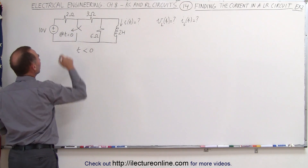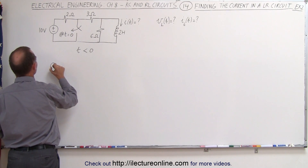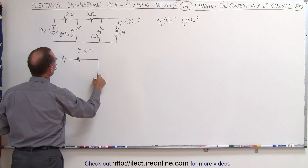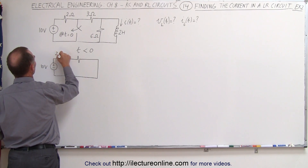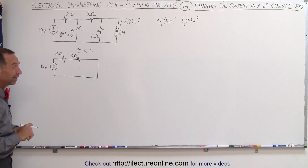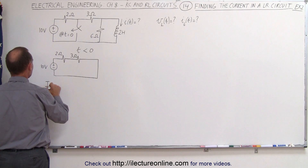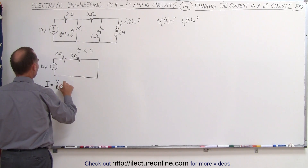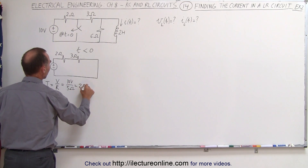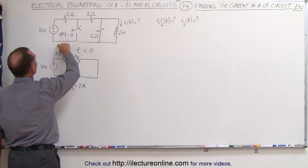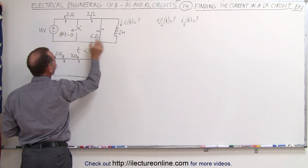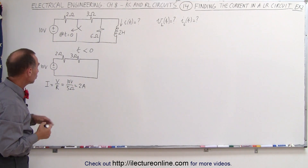Redrawing the circuit with this open right here, it'll look as follows. We have the 10 volt voltage supply, we have a 2 ohm resistor, a 3 ohm resistor, a short, and back to the voltage source — 2 ohms, 3 ohms — and that will be the equivalent circuit before time equals 0. To find the current at that moment, the current I equals the voltage divided by the total resistance. The total resistance will be 5 ohms: 10 volts divided by 5 ohms equals 2 amps, which means that before time equals 0, there's a 2 amp current flowing from the voltage supply through the two resistors, through the inductor, and back.